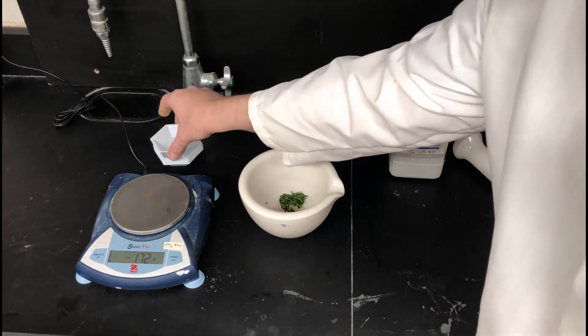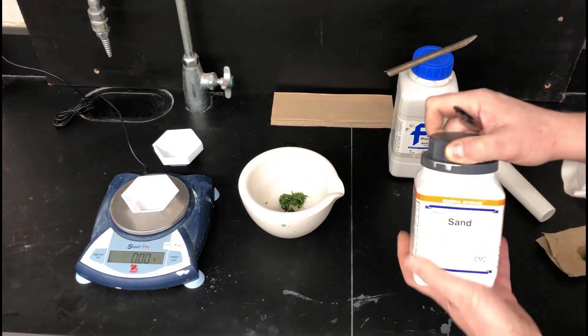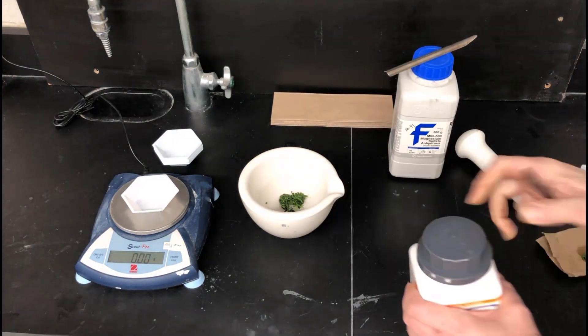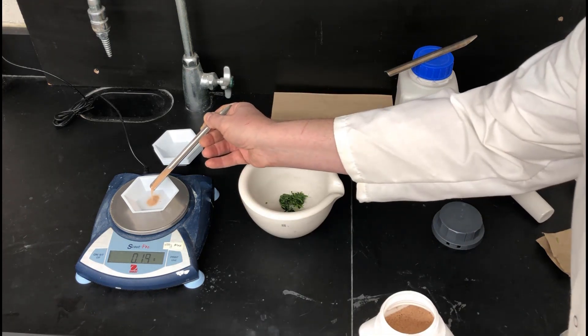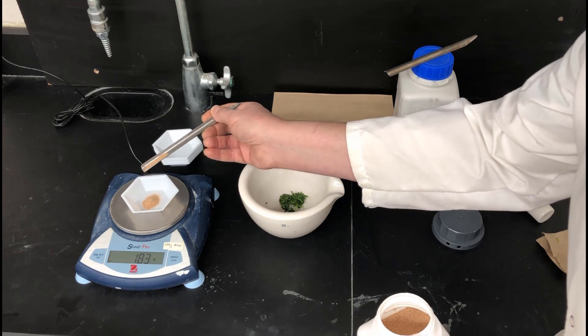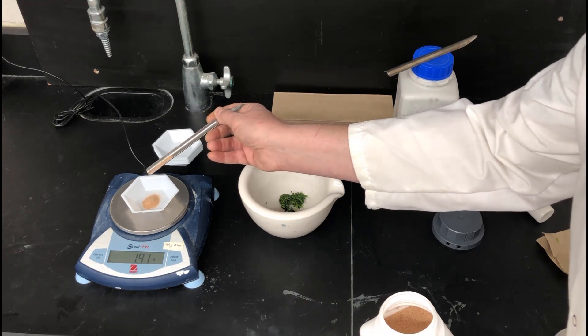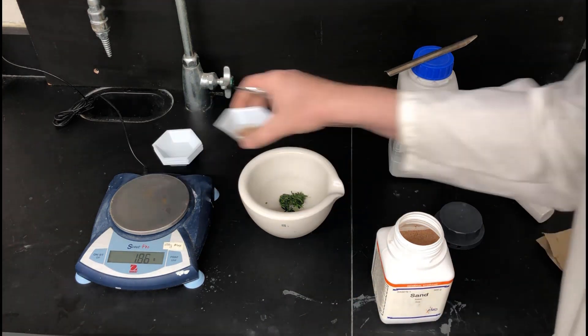So to assist with the grinding process, we are going to next weigh out some sand. The sand is an abrasive material that will help to grind up the pigments or the leaves and the pigments and allows the extraction to work a little bit better. So here, just weighing out about two grams, and then that sand goes right into the container.